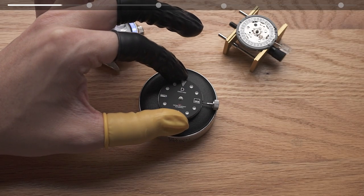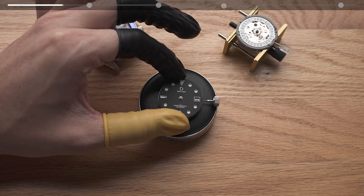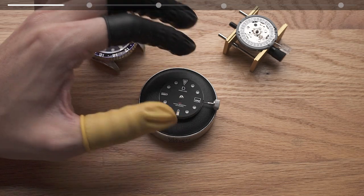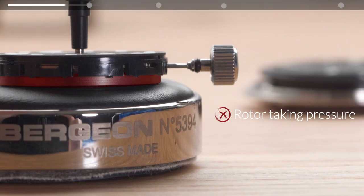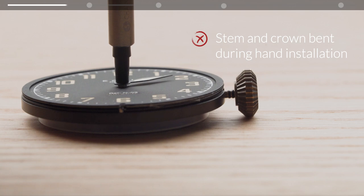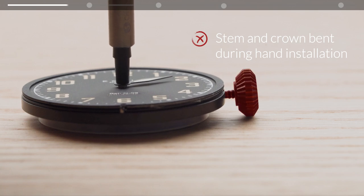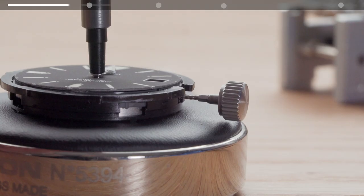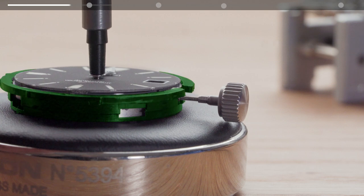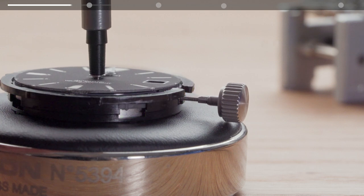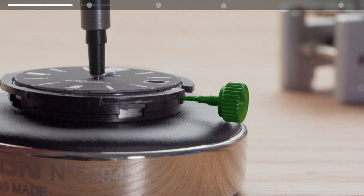Let's prop up the movement and dial assembly. There are multiple ways to do this but make sure the bottom side of the movement, the stem and the crown are not taking any pressure during the installation process. In this example there is only pressure on the movement holder, not on the movement itself and not on the crown or stem.